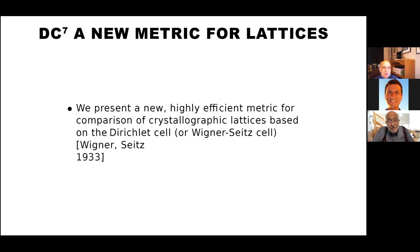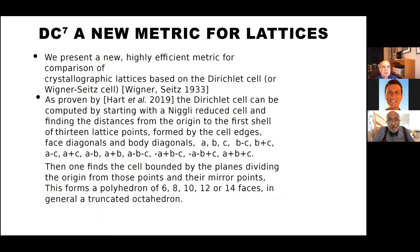When we went to MaxMinn last year, we saw how useful the Dirichlet cell was in calculations and how stable it seemed, so we thought we would look at that. It was proven by Hart two years ago that in order to calculate the Dirichlet cell, you only need to start from a Niggli reduced cell and look at the lattice points that form the edge of the cell surrounding the origin. That's 26 points. Only 13 of them are unique since they're related through the origin. So we thought we would look at those 13 distances. Of course, the cell we're looking at forms a polyhedron—those same five Fedorov cells: 6, 8, 10, 12, or 14 faces.